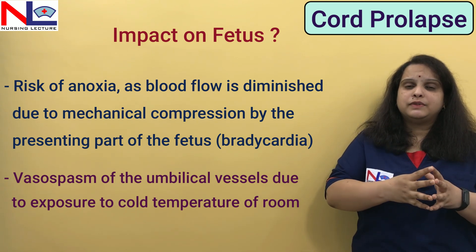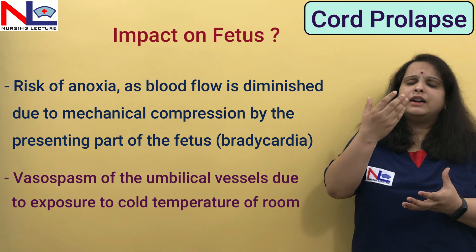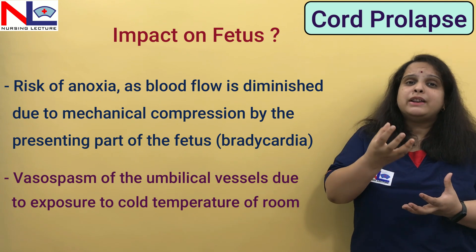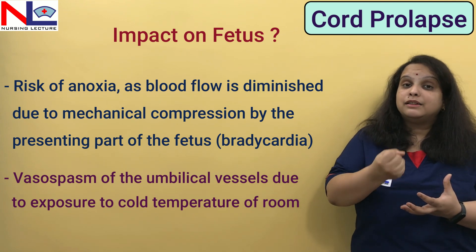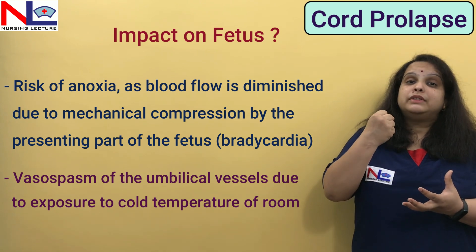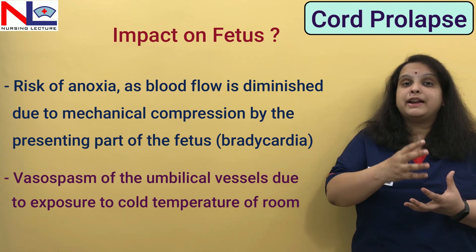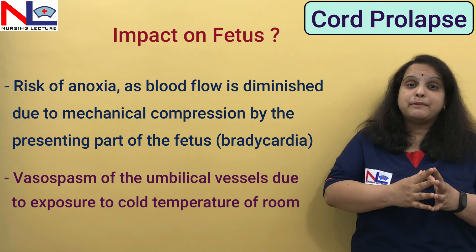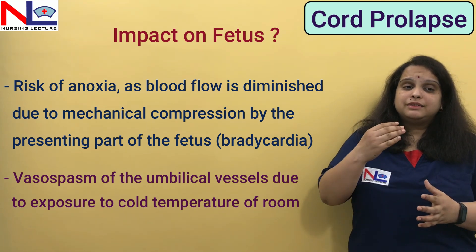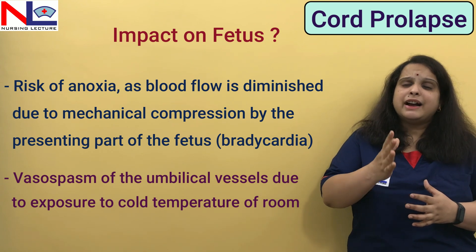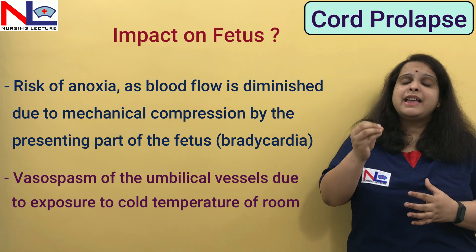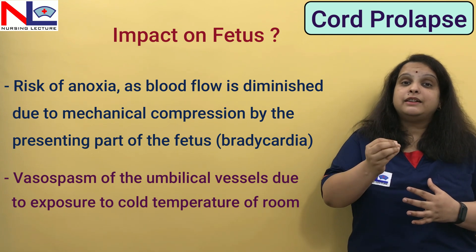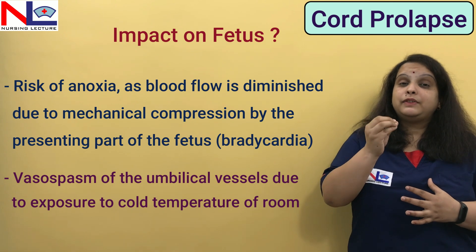But once the cord gets out, the temperature outside — present in the vulva, vagina, or room — is quite low compared to the uterine cavity. This low temperature causes vasospasm of the umbilical vessels. As vasospasm occurs, blood flow toward the fetus decreases and thereby the fetus may develop bradycardia and fetal tissues become hypoxic. Whether the cord gets compressed or there is vasospasm, in either condition blood flow toward the fetus decreases, the fetus becomes hypoxic, and if this condition doesn't resolve soon, fetal death could occur.